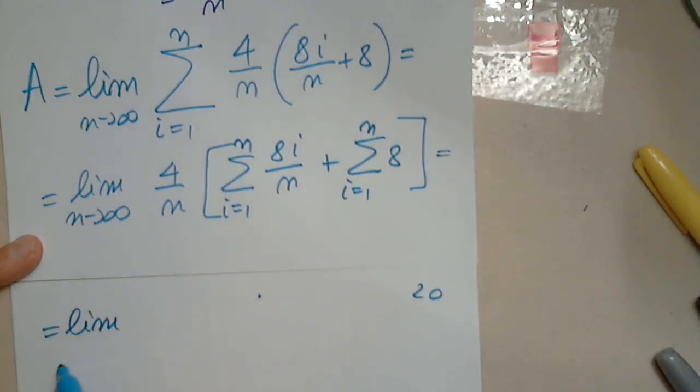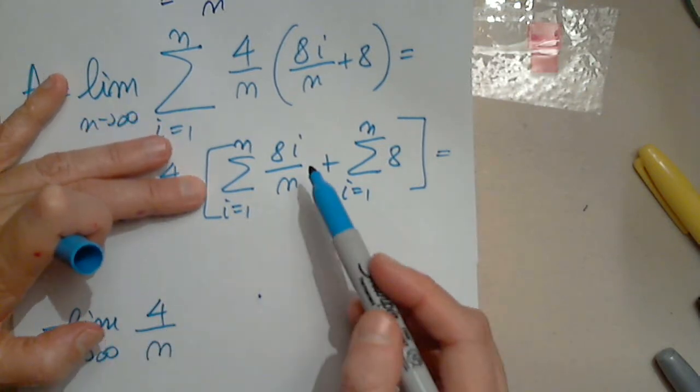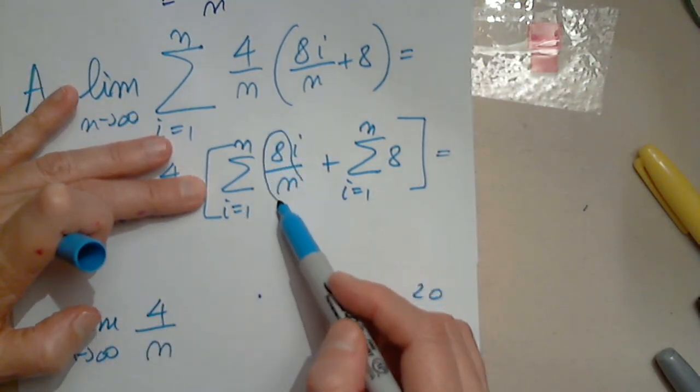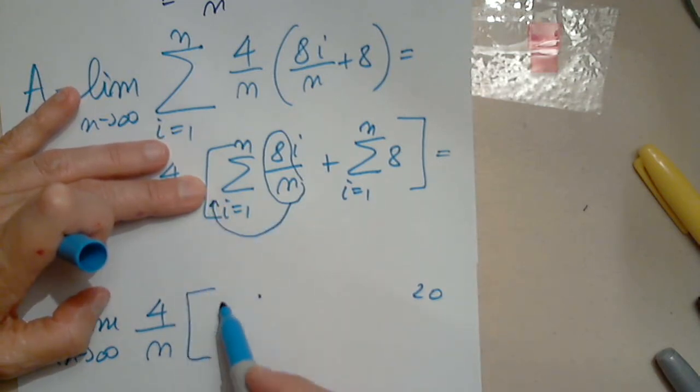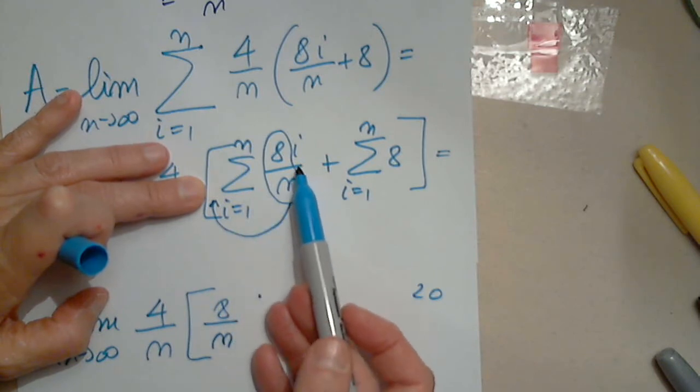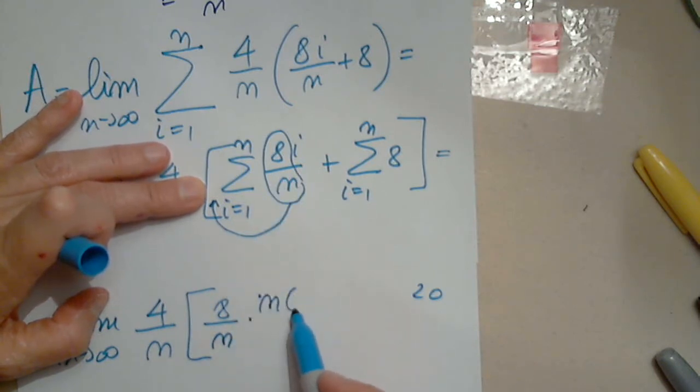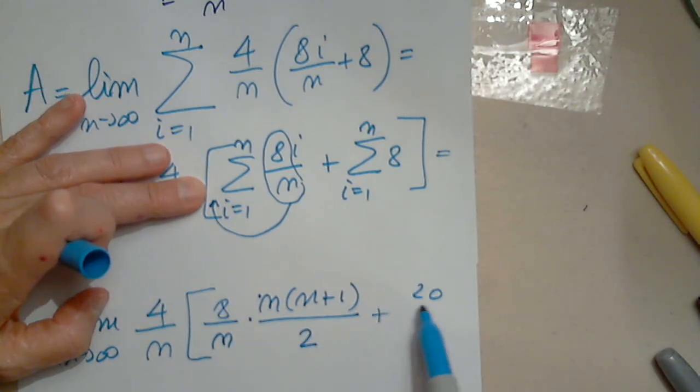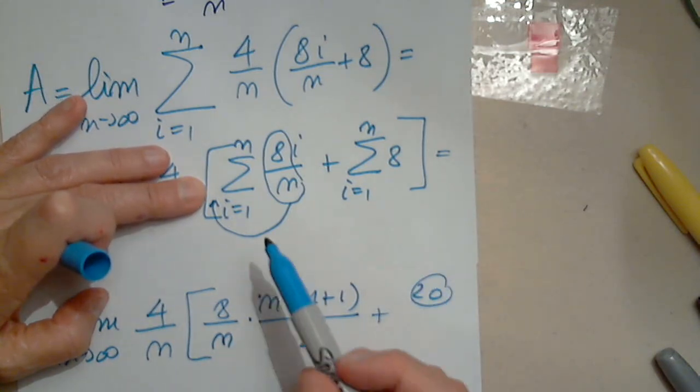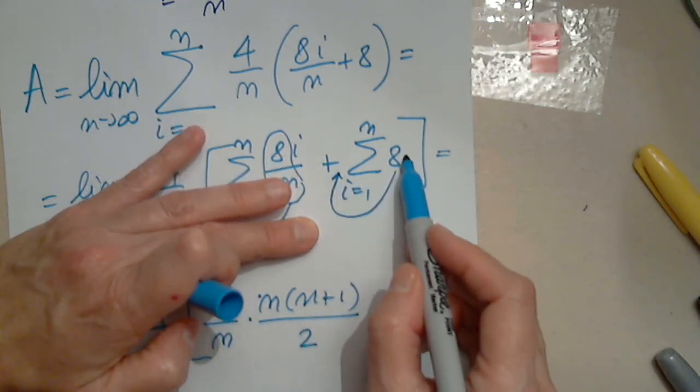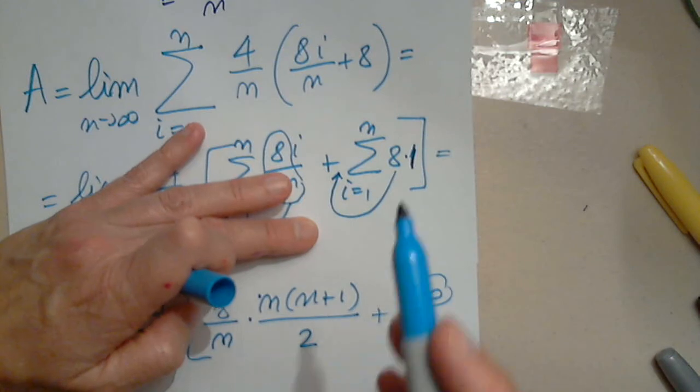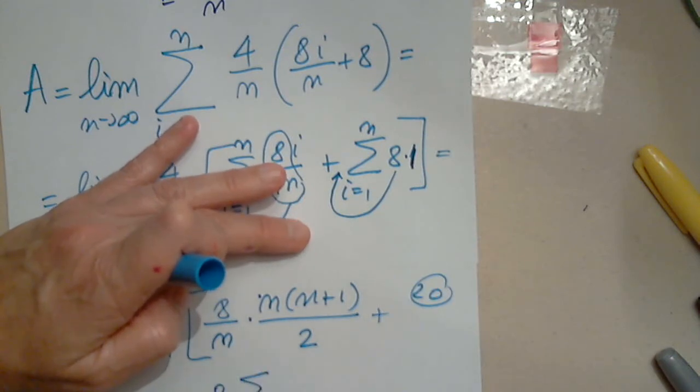This is limit as n approaches infinity from 4 over n. Again, this is a quantity that is constant, so it will go outside. And the sum of i, I know: n times n plus 1 divided by 2 plus the sum of 8, but 8 goes in front and 1 is left. So this is 8, the sum of 1.